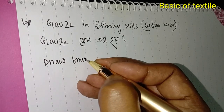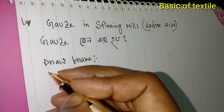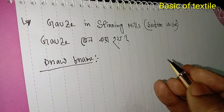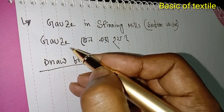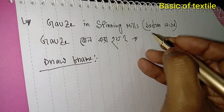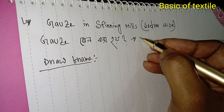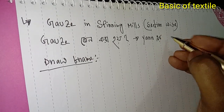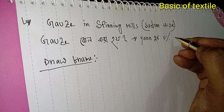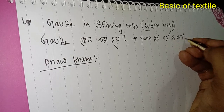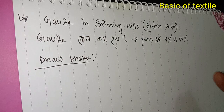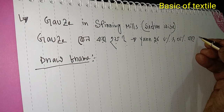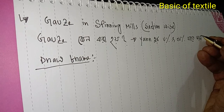Drawing, draw frame, draw frame, draw frame. The draw frame U% and CV% which is very good and important quality parameters in the spinning process.